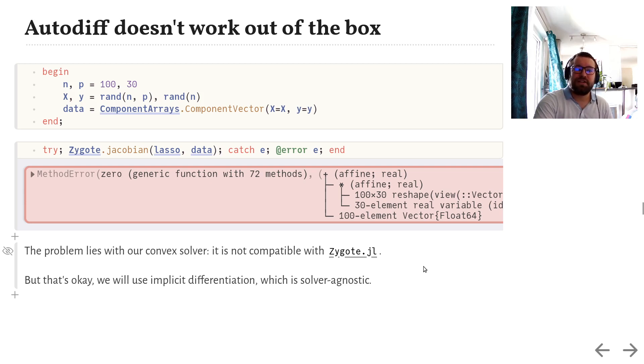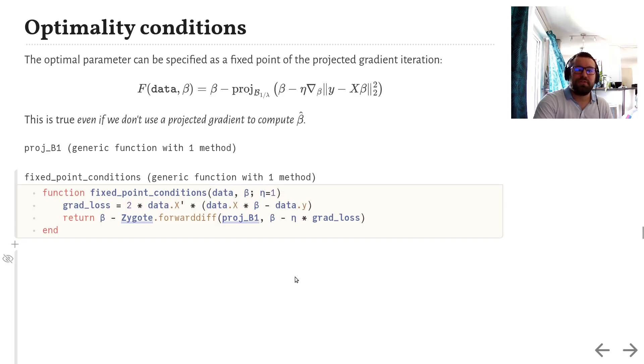But that's okay, because as I told you before, implicit differentiation is solver agnostic. To apply it, we need to define conditions that the output of the solver satisfies. Here, the trick is to see that the optimal vector of weights, beta, can be specified as a fixed point of the projected gradient iteration. So, here is the associated function f. And note that this is true even if we use something entirely different to compute beta.